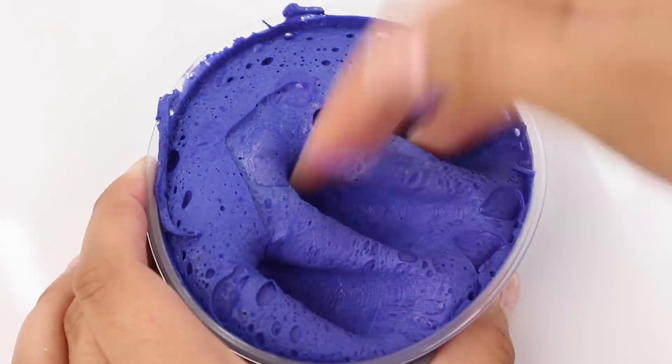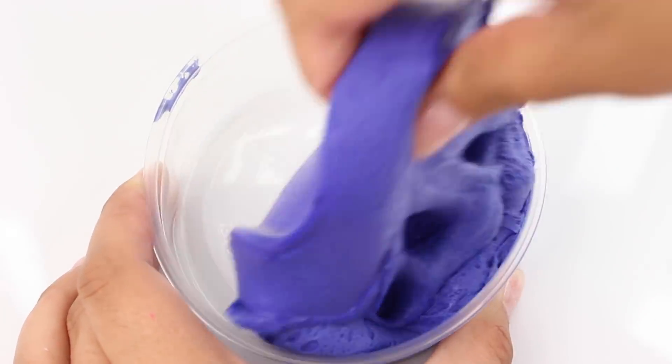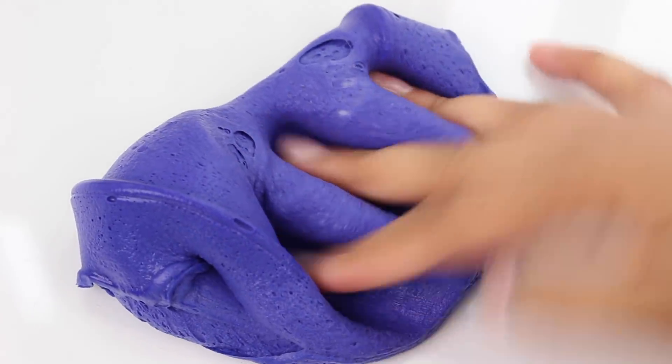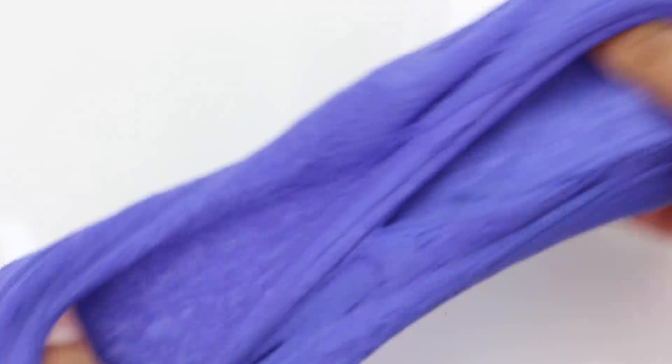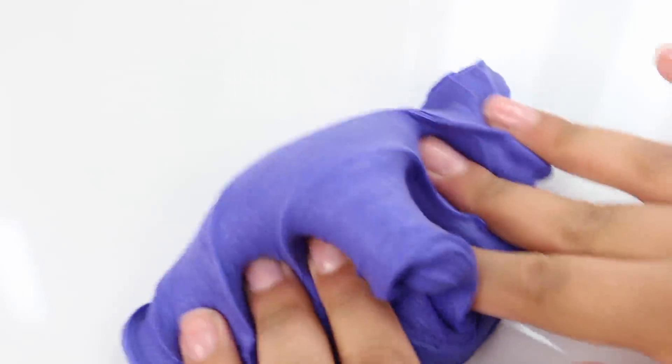The last slime in this restock is grape butter. This one is a dark purple, almost indigo color. It is super spreadable, creamy, and has a really sweet grape scent. I love this slime and I think you guys will too.